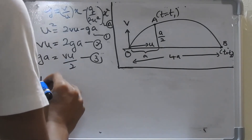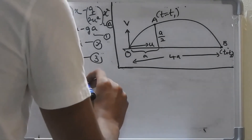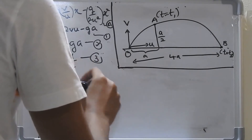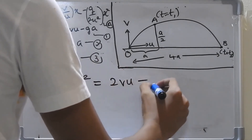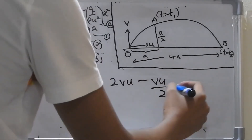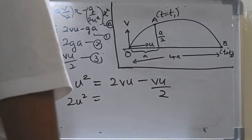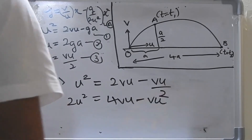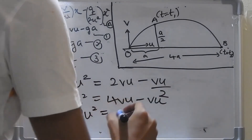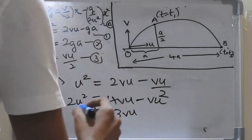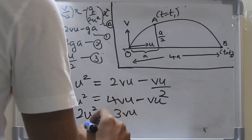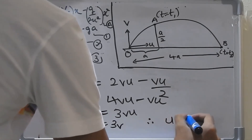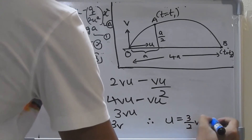Now we can apply equation 1 using GA equals VU over 2. Substituting into U squared equals 2VU minus GA: U squared equals 2VU minus VU over 2. Multiplying the whole equation by 2: 2U squared equals 4VU minus VU, so 2U squared equals 3VU. One U cancels, giving 2U equals 3V. Therefore U equals 3 over 2 times V.